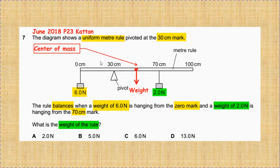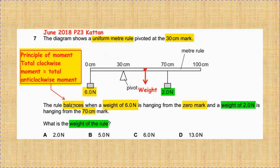From zero centimeters to 100 centimeters. To answer the question, the key word is that the rule balances. According to the principle of moments, the total clockwise moment equals the total anticlockwise moment.